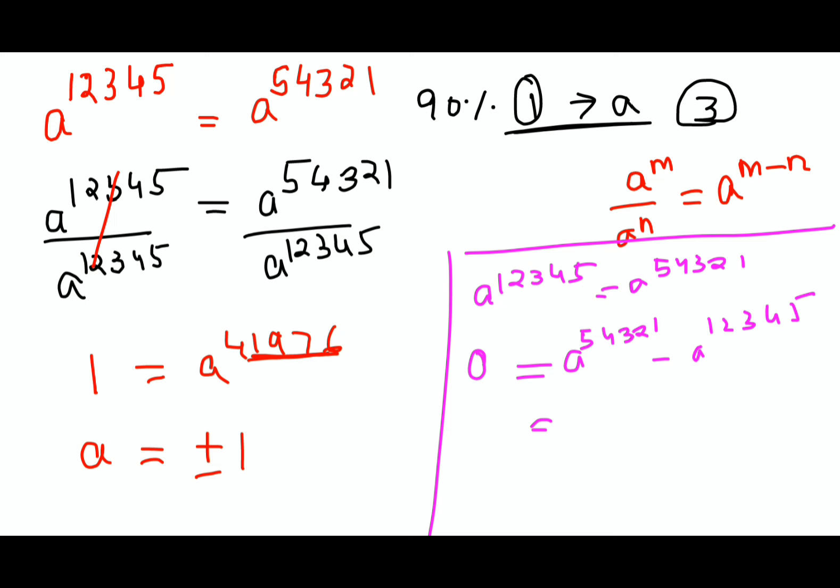You will have a^12345 common, and you are left with a^12345 times (a^41976 - 1) equals 0.